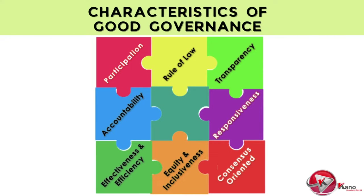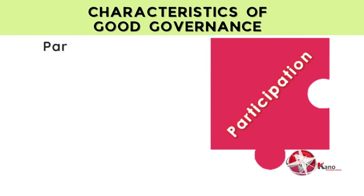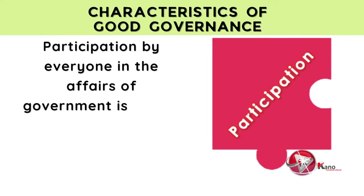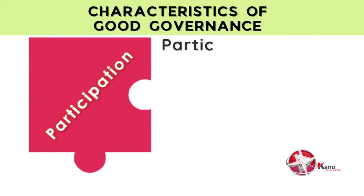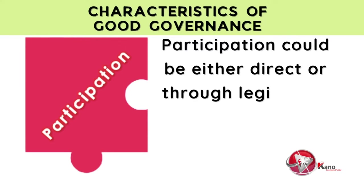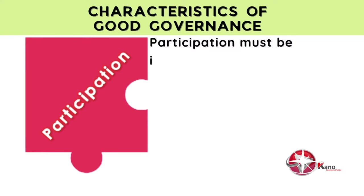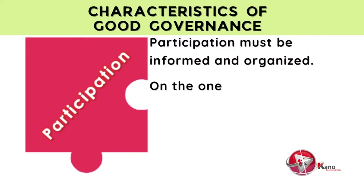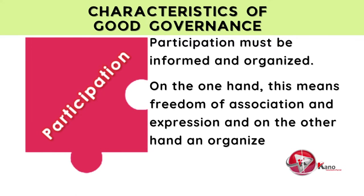Let's start with the first characteristic of good governance, which is participation. Participation by everyone in the affairs of government is one of the most important cornerstones of good governance. This participation could be either direct or through legitimate intermediary institutions or agents. Participation must therefore be informed and organized — on one hand, it means freedom of association and expression, and on the other, an organized civil society.